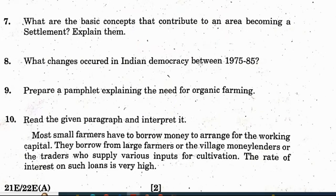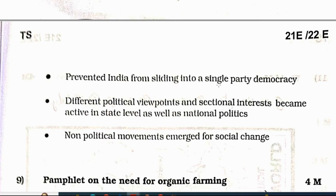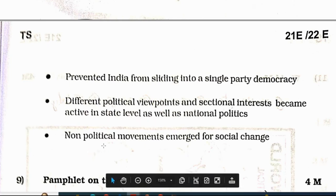Question 8: what changes occurred in Indian democracy between 1975 and 1985? Changes include: basic democratic rights were denied, defeat of the Congress party at the center, emergence of a viable alternative to the Congress at both center and states, prevented India from sliding into single-party democracy, different political viewpoints and sectional interests became active at state and national level, and non-political movements emerged for social change.